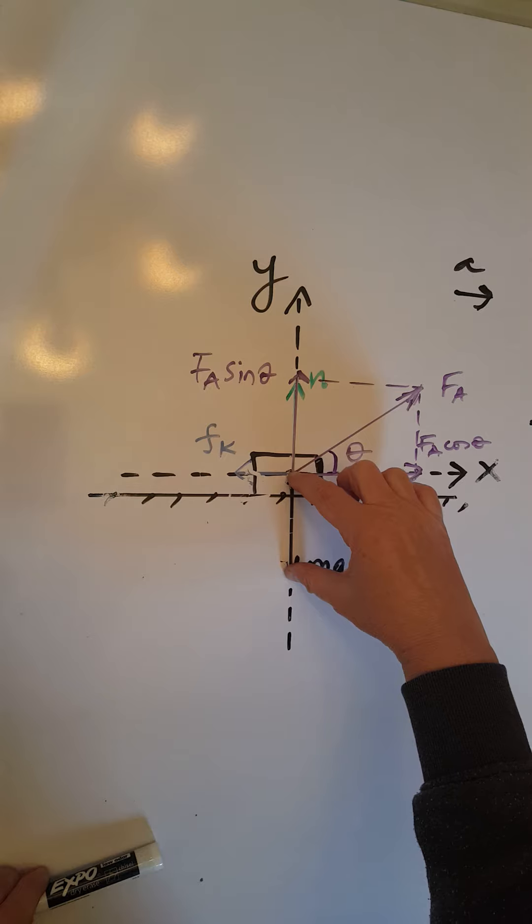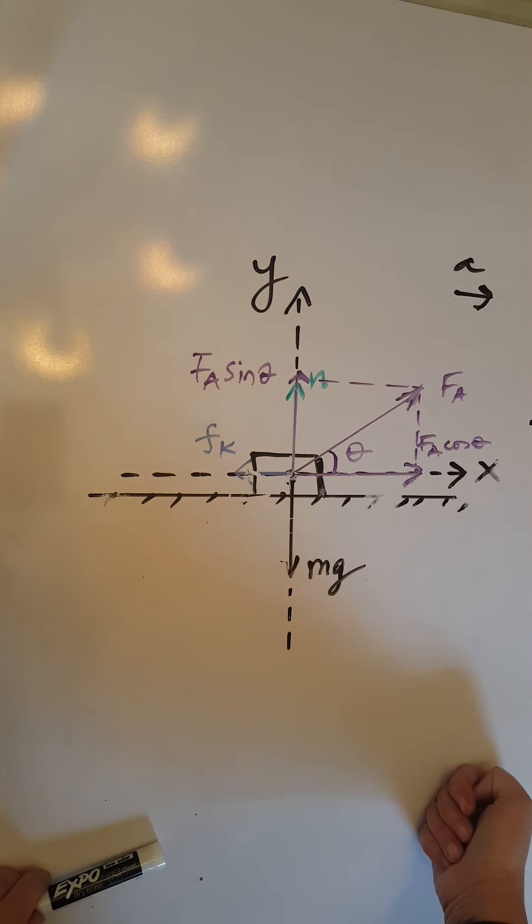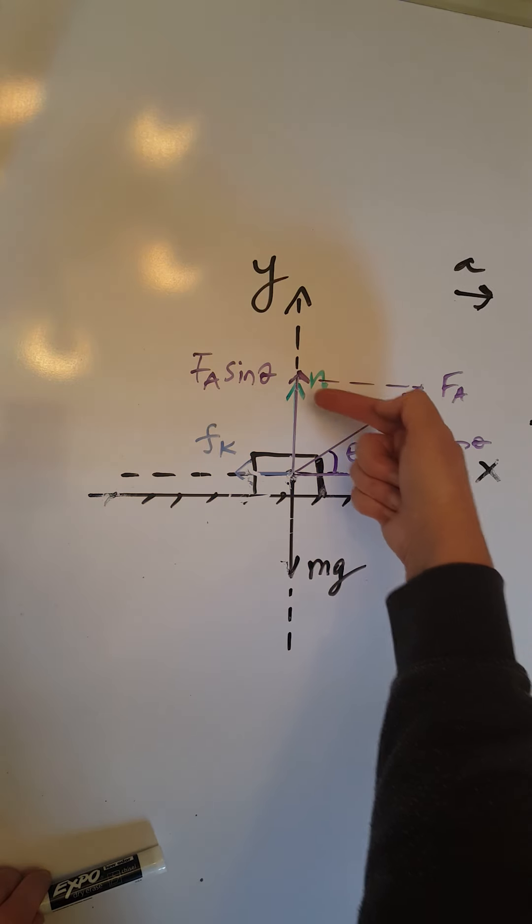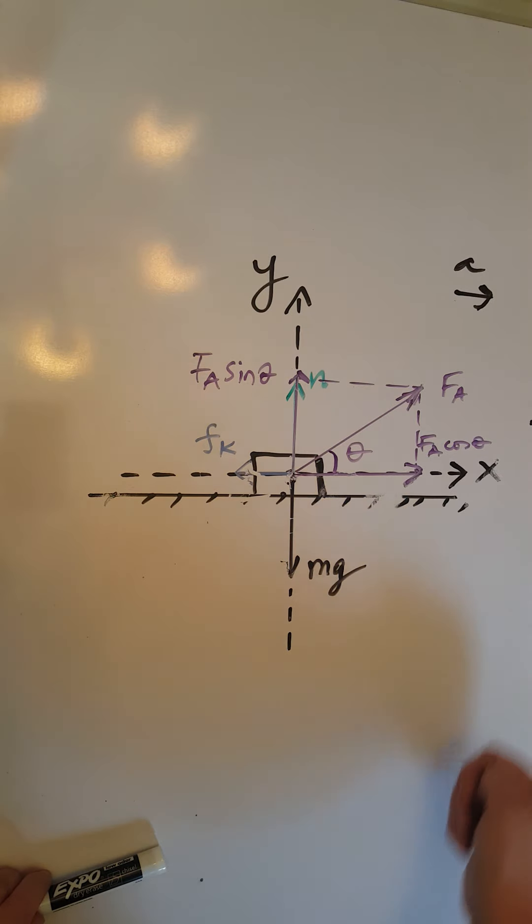So let's start with checking the magnitudes of the y forces to make sure they are balanced. Well, we have one force going downwards and two forces going upwards. In order to balance them out, the one that goes downwards, Mg, must be exactly as long as the sum of the two forces going upwards, which is the green normal force and the purple F a sine theta. It's obvious that it's not.